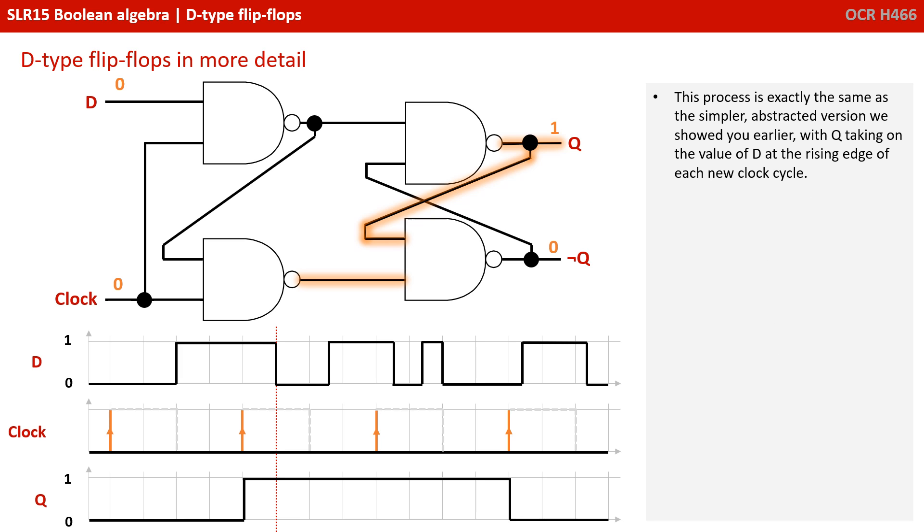This process is exactly the same as the simpler, abstracted version we showed you earlier, with Q taking on the value of D at the rising edge of each new clock cycle.